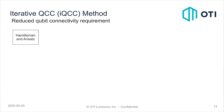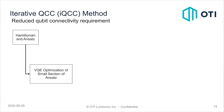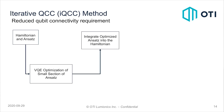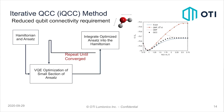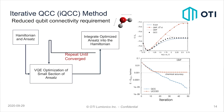To visualize this as an algorithm: we have a Hamiltonian ansatz, we do a VQE optimization of a small section of the ansatz, we integrate that optimized ansatz into the Hamiltonian, and repeat until convergence. Some results using just a symmetric stretch of water: we can get QCC energies even with very low gate depth that are very close to the exact energy, particularly at equilibrium geometries.